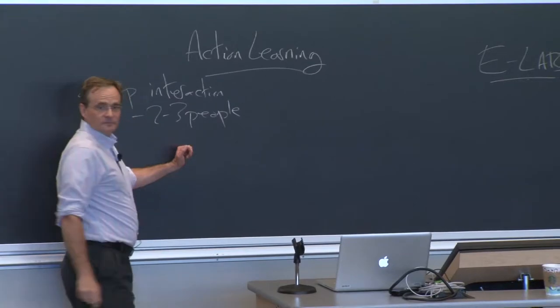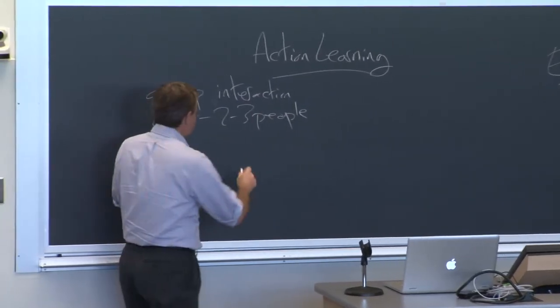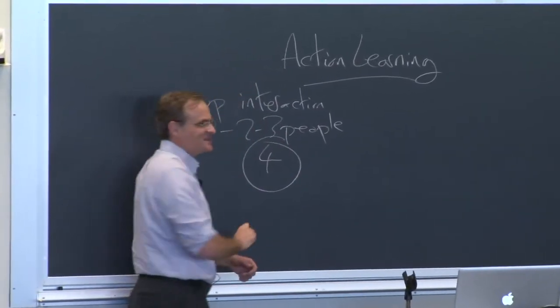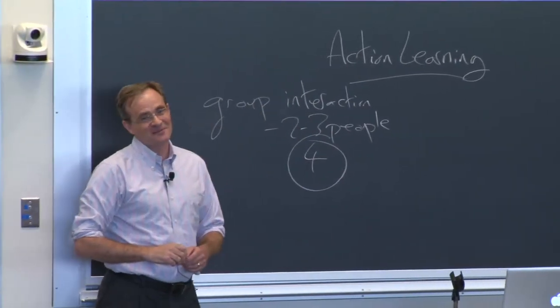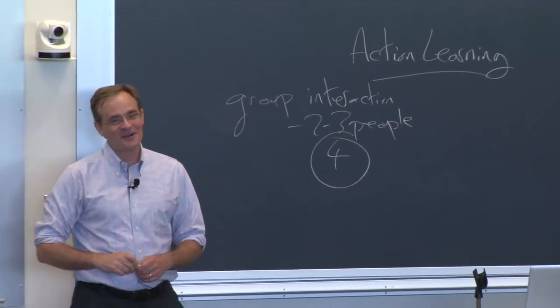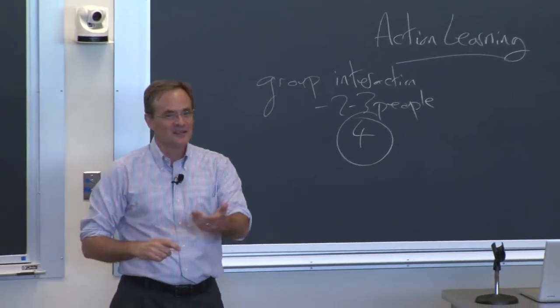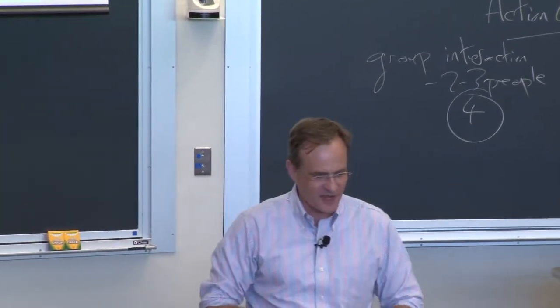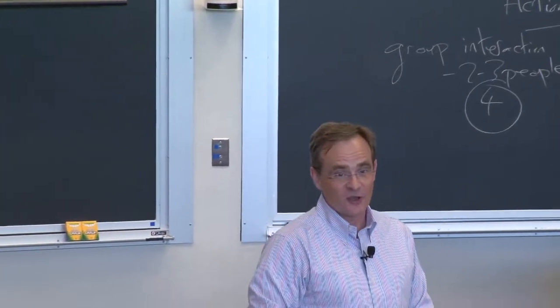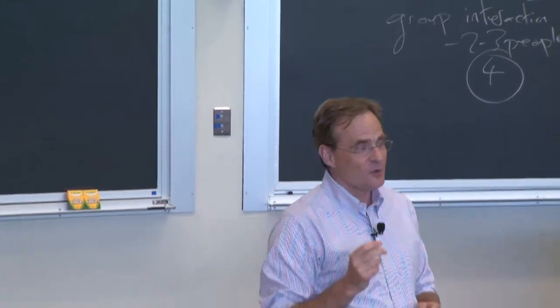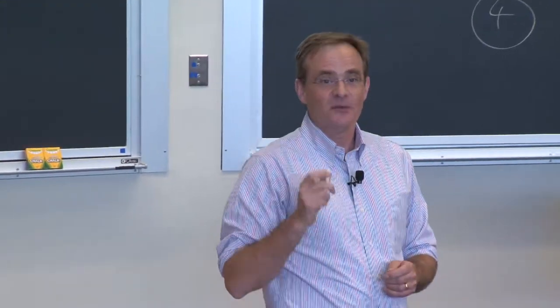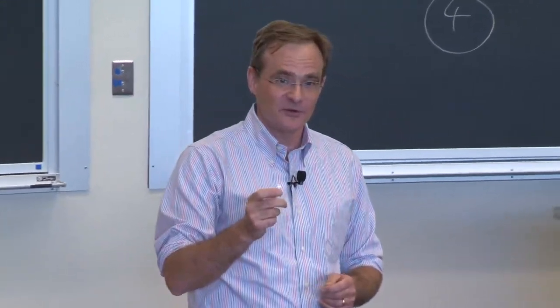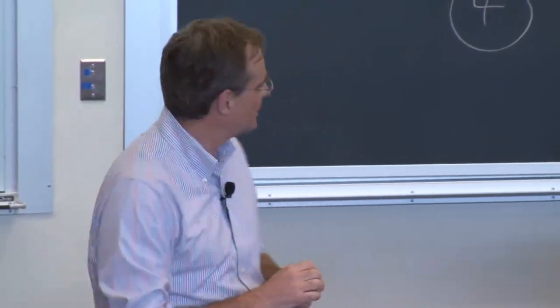One audience member shared that they took away the group interaction — forming strategies and approaches, two or three people arguing together. The Global Entrepreneurship Lab, which Simon co-founded with Richard Locke, who was just this week named Provost of Brown University — we can all claim some part in that. We should give Richard a round of applause, because he's a big reason we're all here today.